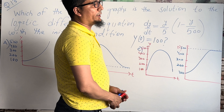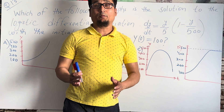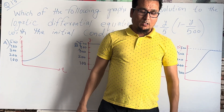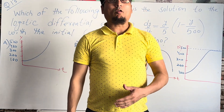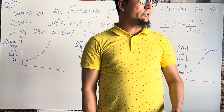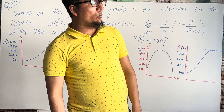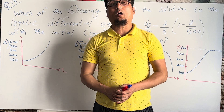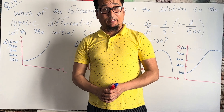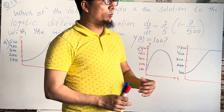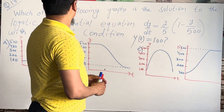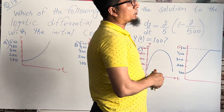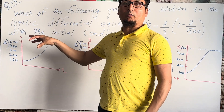Assalamu alaikum, bismillah ir-rahman ir-rahim. In the name of Allah, the most beneficial and the most merciful. As I already told you in my previous lecture, we are solving the past paper of AP Calculus 2018. We already solved questions one through twelve. Now we move on to question number thirteen.